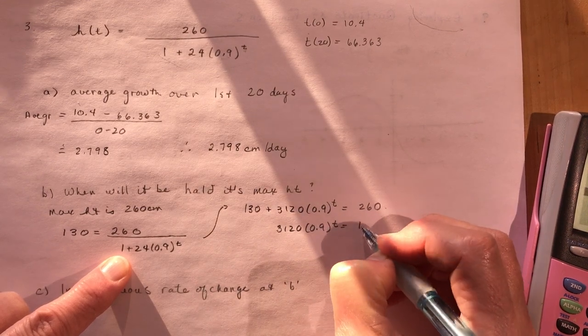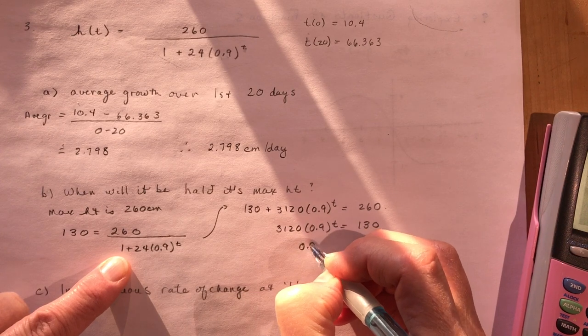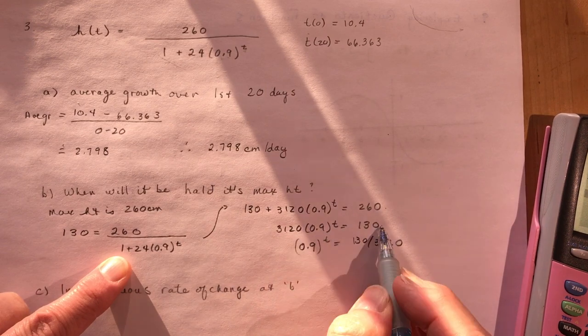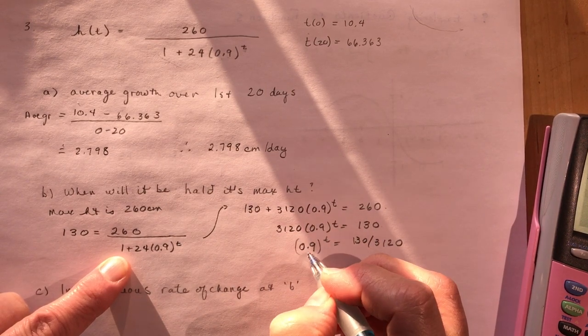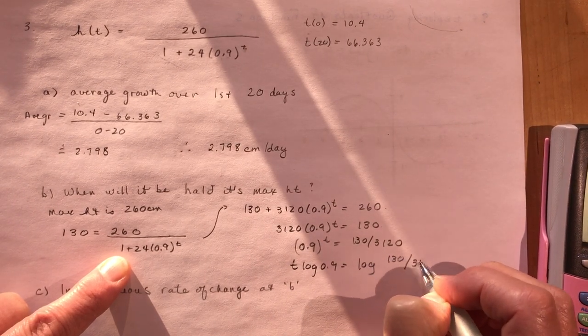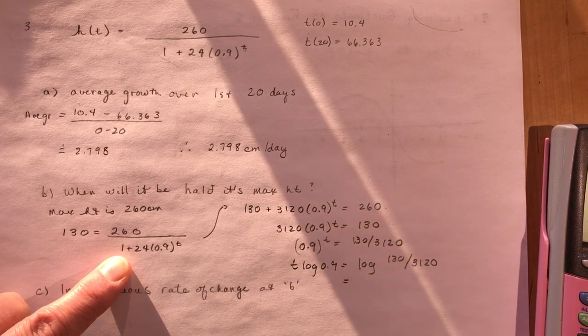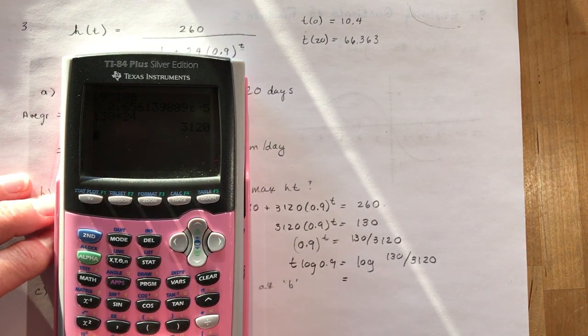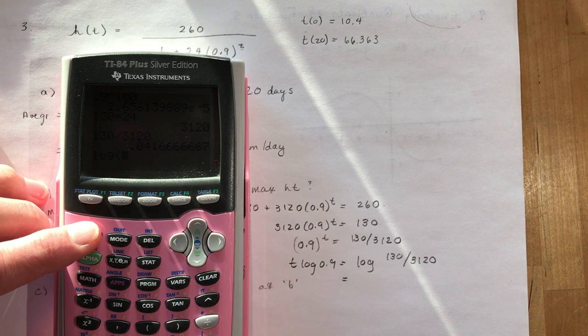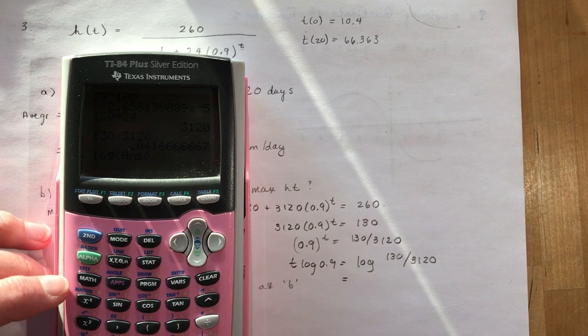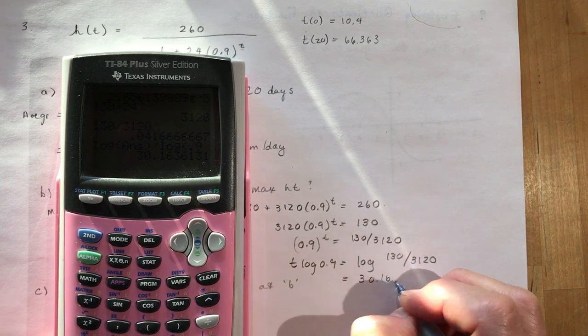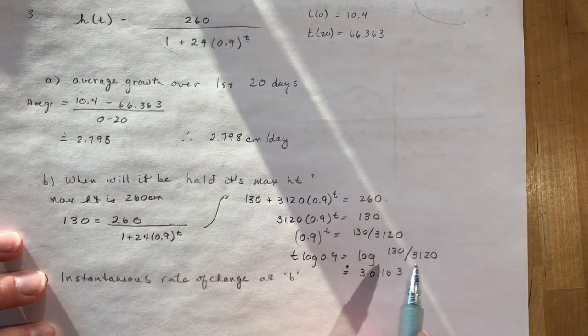You can subtract this over here—that's going to give you 130. We could probably have done this in less steps. So 130, and then I divide by 3120. 0.9 to the power of t equals 130 over 3120. So I just divided here and now I do the log. So t times log 0.9 equals the log of 130 over 3120. If you do all that work—let's do that right here—so I have the log, let's do 130 divided by 3120 equals this. So I want the log of my answer and I'm going to divide that by the log of 0.9. And I get 30.163 approximately. So that means it will be at half its maximum height in 30 days.